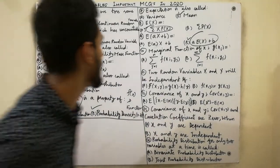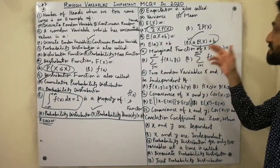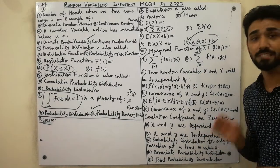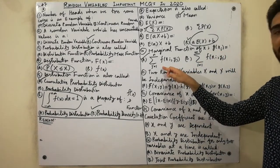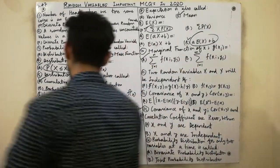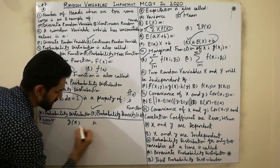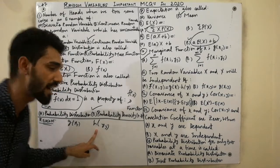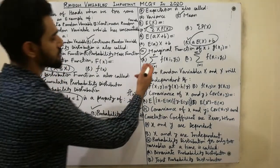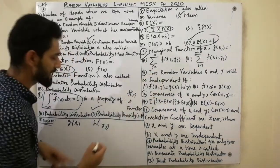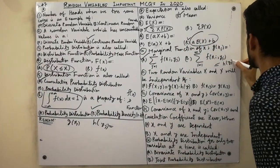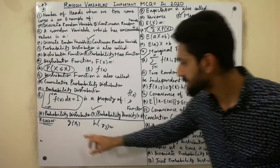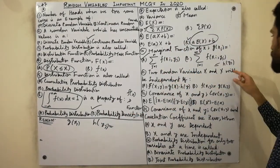The next MCQ covers marginal functions. The marginal function of x, g(x), is always equal to the summation over j from 1 to n of f(x, y). Remember, there are two marginal functions: g(x) for the marginal function of x, and h(y) for the marginal function of y. Similarly, h(y) equals the summation over i from 1 to n of f(x_i, y).